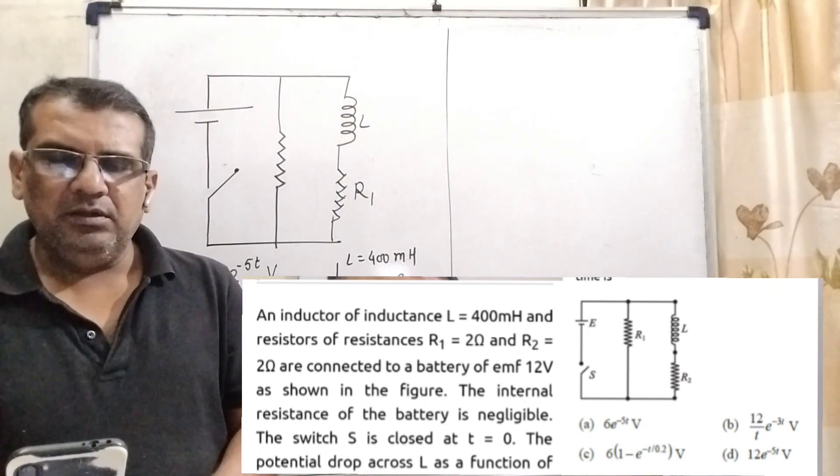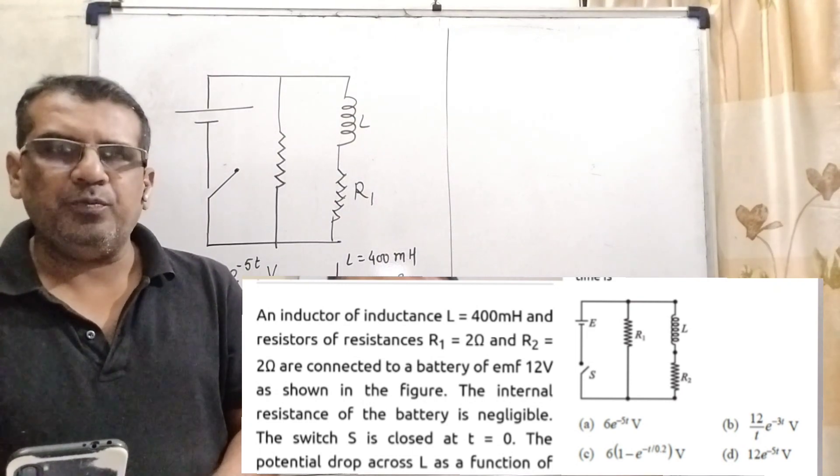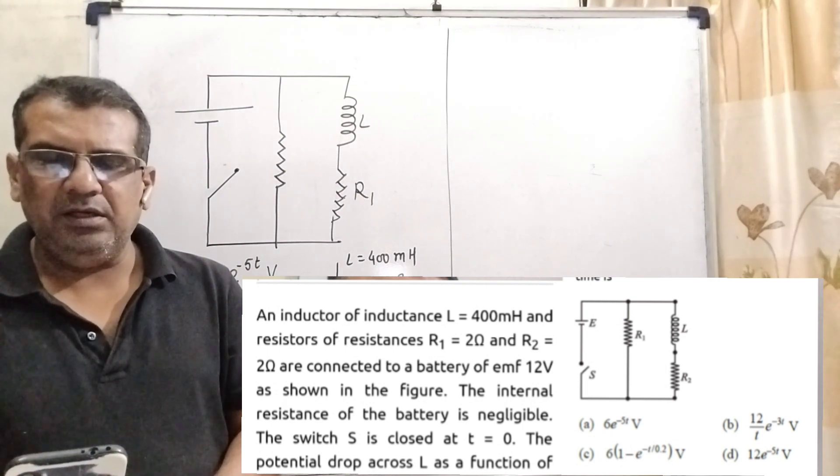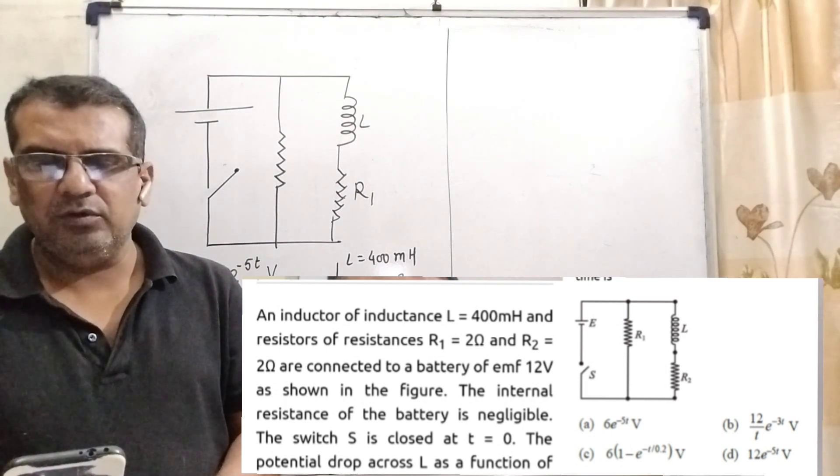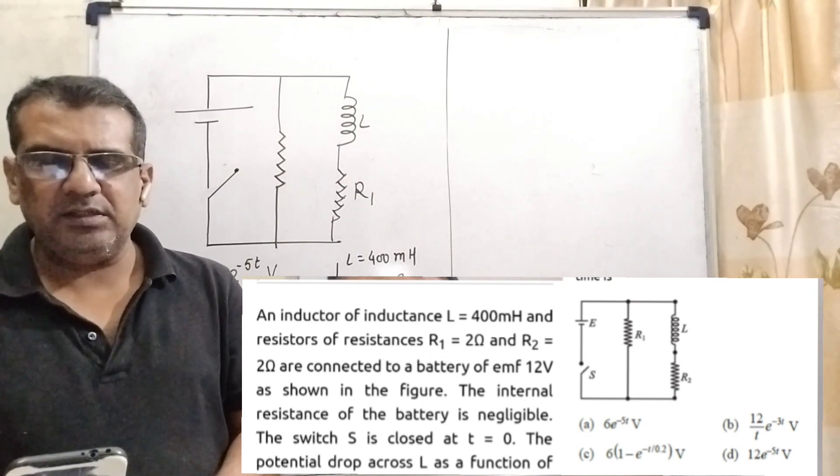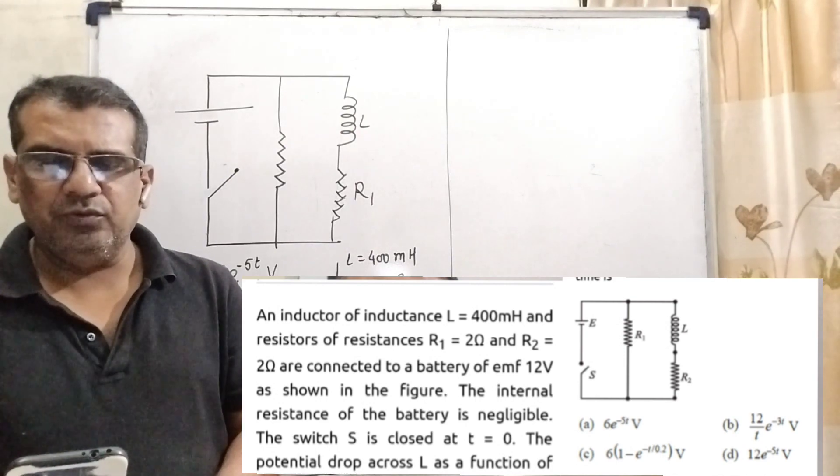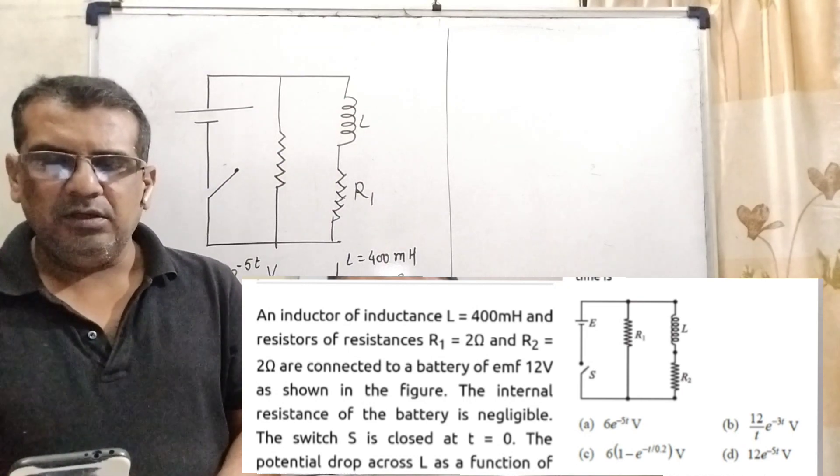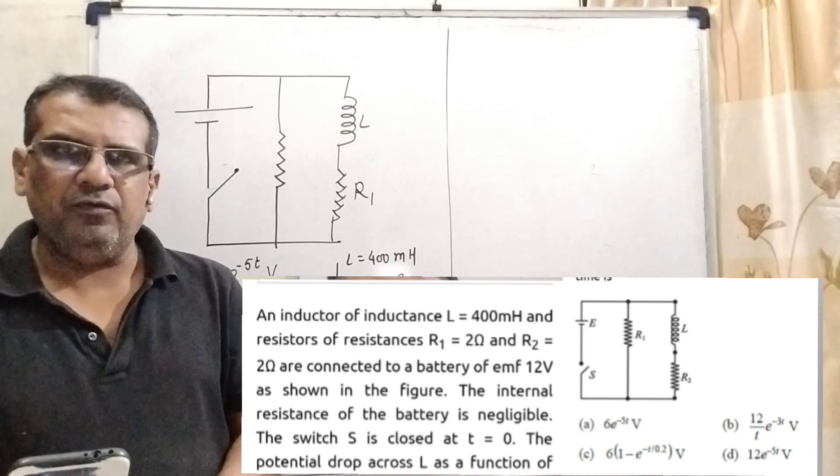Option A: 6E raised to power minus 5T volt. Option B: 12 by T, E raised to power minus 3T volt. Option C: 6 into bracket, 1 minus E raised to power minus T by 0.2 volt. And last option D: 12E raised to power minus 5T volt.